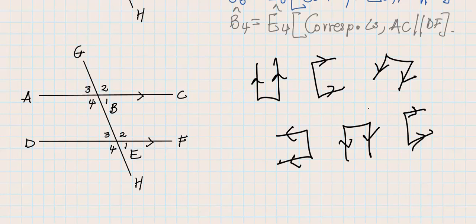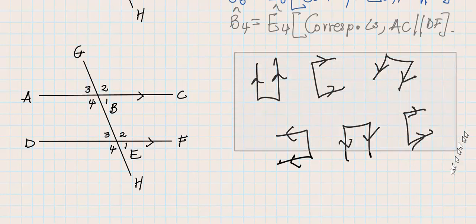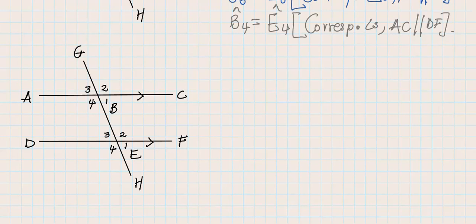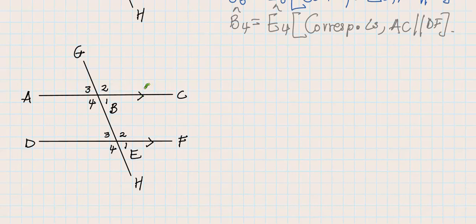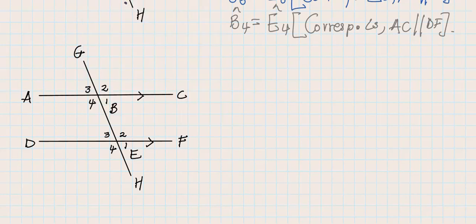In this case we only have two pairs of co-interior angles. Let's start by highlighting the first one. Please pause the video, write the pair of co-interior angles, and then write them with the reasons — see if you can do it without me, then check the video afterwards.